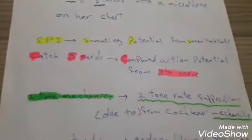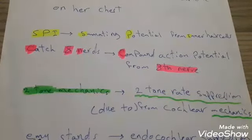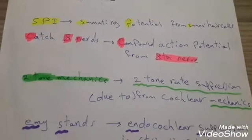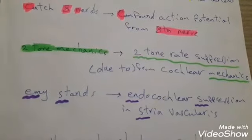Two-tone mechanics: The two-tone rate suppression is due to or from the cochlear mechanics. Emmy stands: Endocochlear suppression from the stria vascularis.